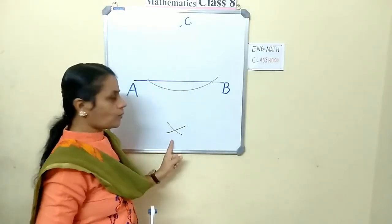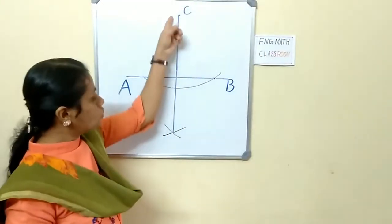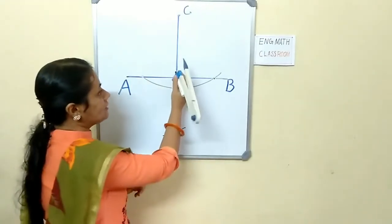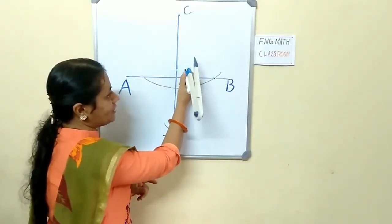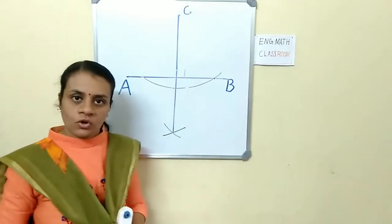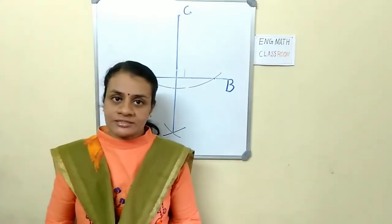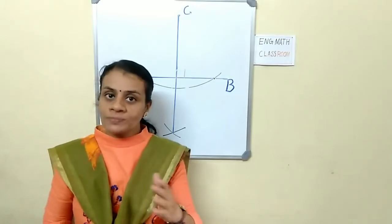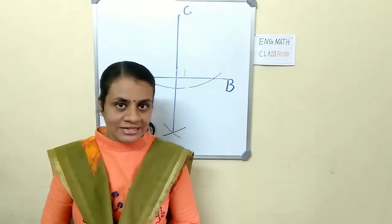And join these two points. So, join these two points. This angle makes 90 degrees. It's time to wind up my class. I hope that you have understood my class.